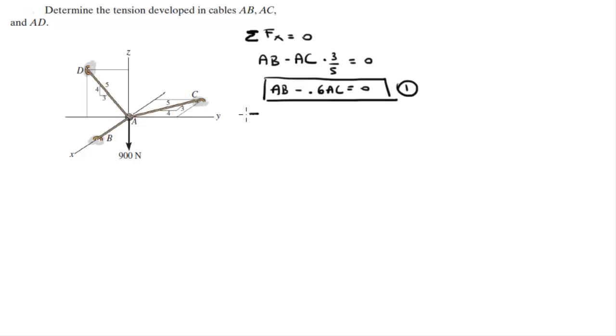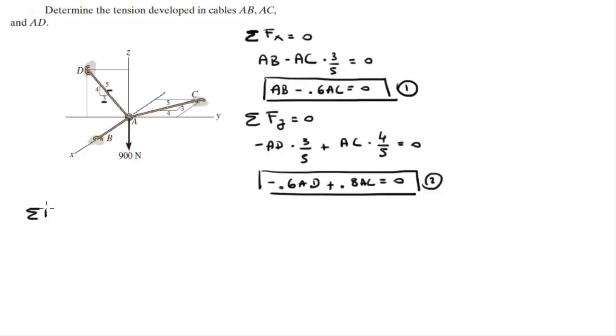You know that the sum of the forces on the Y is equal to 0, which means that the component on the Y of AD is AD times 3 over 5, plus the Y component of AC which is AC times 4 over 5 is equal to 0. So you get minus 0.6AD plus 0.8AC is equal to 0, calling that equation 2.